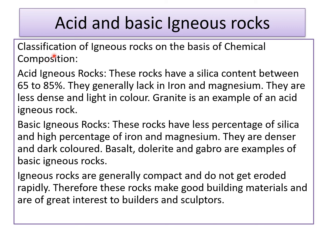Now we will see the classification of igneous rocks on the basis of their chemical composition. First we have acid igneous rocks. These rocks have a silica content between 65 to 85 percent. They generally lack iron and magnesium. They are less dense and light in color. Granite is an example of acid igneous rocks. Then we have basic igneous rocks. These rocks have a lower percentage of silica and a high percentage of iron and magnesium. They are denser and darker. Basalt, dolerite and gabbro are examples of basic igneous rocks.